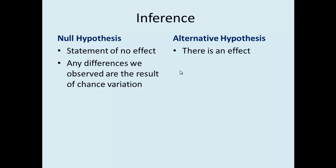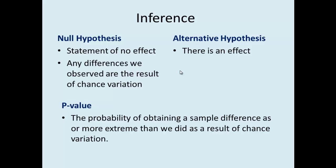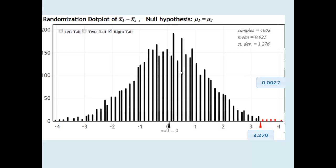The alternative hypothesis is that there is an effect. That's what we hope to find evidence for, that the directions involving memory training actually had an effect on the mean score for the students. The p-value is the probability of obtaining a sample difference as or more extreme than we did as a result of just chance variation. In our randomization distribution, we see that it was possible to obtain a mean score as or more extreme than the 3.27 that we actually observed, but that it happened so infrequently due to chance. In fact, we did the simulation 4,003 times, and in less than 1% of all of those simulations did we obtain a mean difference in scores as or more extreme than the 3.27.